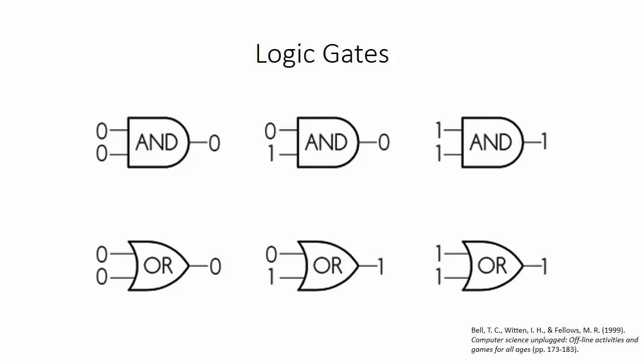The only way to output a 1 from an AND gate is to input two 1s, otherwise you get a 0. The only way to output a 0 from an OR gate is to input two 0s, otherwise you get a 1.